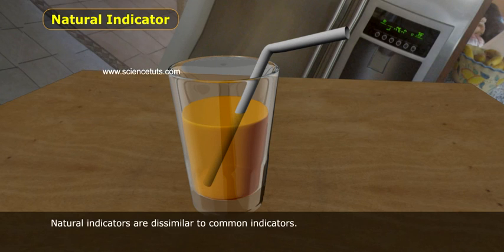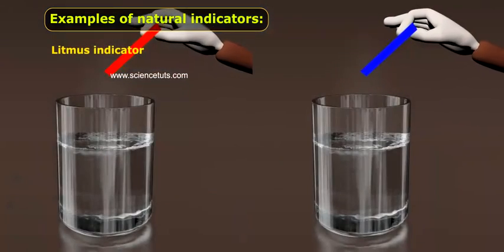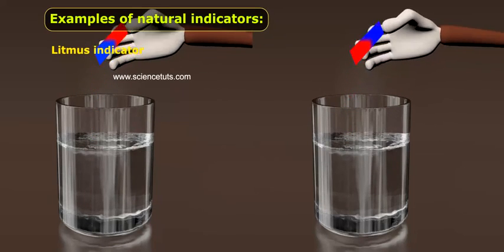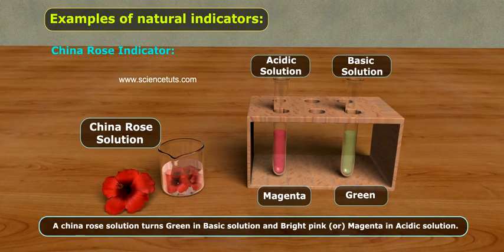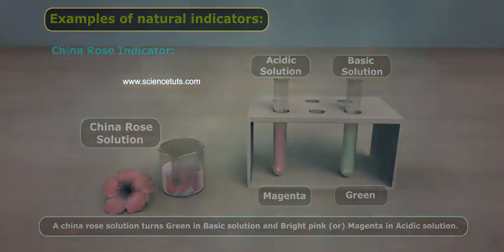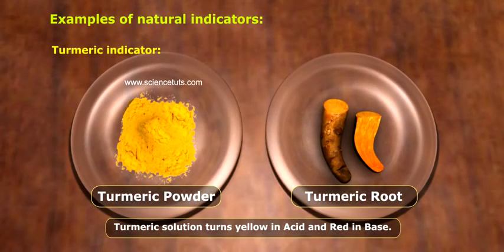Natural Indicators are dissimilar to common Indicators. Examples of Natural Indicators include: Litmus Indicator, China Rose Indicator, and Turmeric Indicator.